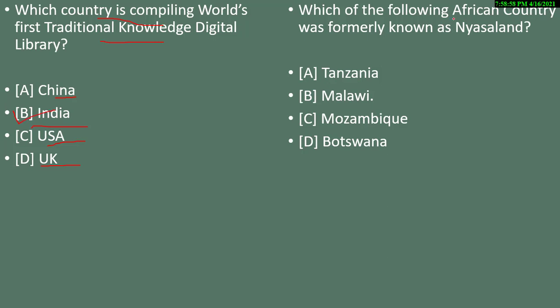Question 18: which African country was formerly known as Nyasaland? Options are Tanzania, Malawi, Mozambique, or Botswana. The correct answer is option B — Malawi.